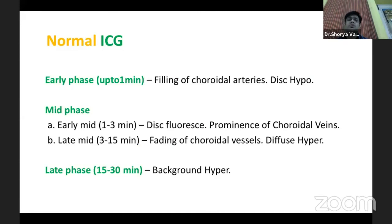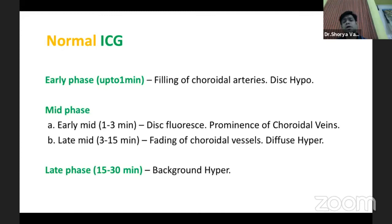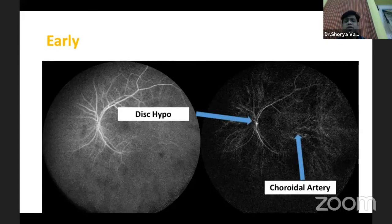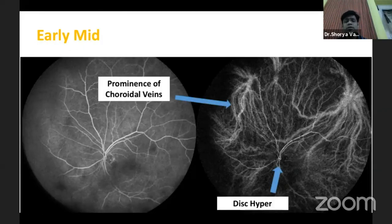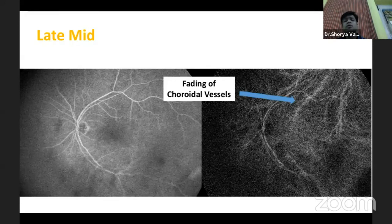Comparing normal ICG to normal FFA, it has different phases. The early phase is when filling of the choroidal arteries occurs and the disc is hypofluorescent due to the watershed zone. The mid phase is divided into early mid and late mid: in early mid, prominence of choroidal veins occurs; in late mid, fading of choroidal vessels occurs with diffuse hyperfluorescence that becomes even more prominent in the late phases. As seen in the images, the disc is hypofluorescent in the early phase, then fluoresces in the early mid phase, and choroidal vessel fading occurs in the late mid phase.